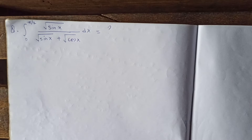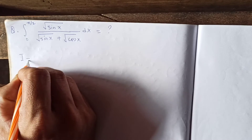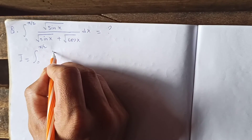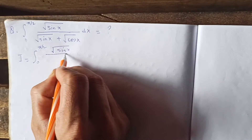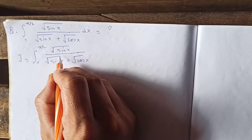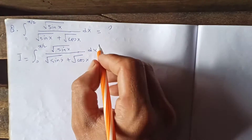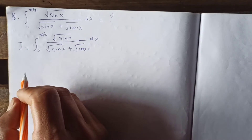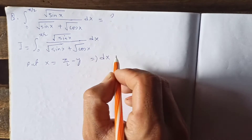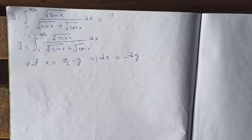Let's call the integral I. So I equals the integral from 0 to π/2 of √(sin x) over (√(sin x) + √(cos x)) dx. Now let's use the substitution method: put x equal to π/2 minus y, so if I differentiate, I get dx = minus dy.